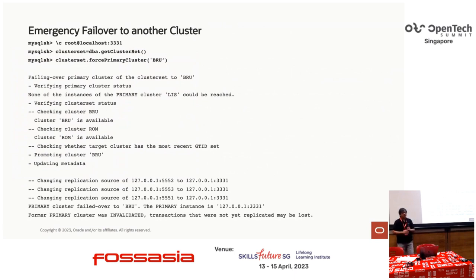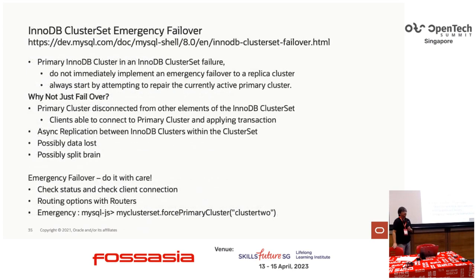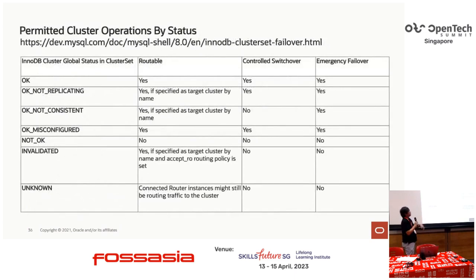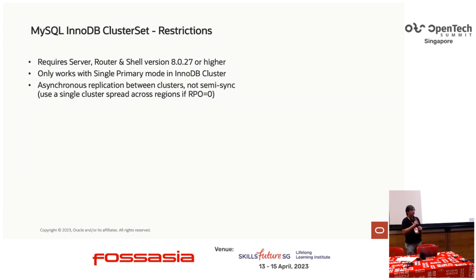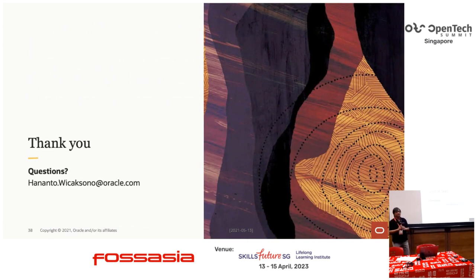In the emergency failover process, `forcePrimaryCluster()` sets the replica cluster as the new primary and marks the existing primary cluster as invalidated. Switchover and emergency failover are only possible when the cluster status is not 'invalidated' or 'unknown'. Regarding restrictions: InnoDB Cluster Set requires MySQL version 8.0.27 or higher, only works with single-primary mode, asynchronous replication is supported, and semi-synchronous replication is not supported. Thank you for listening.